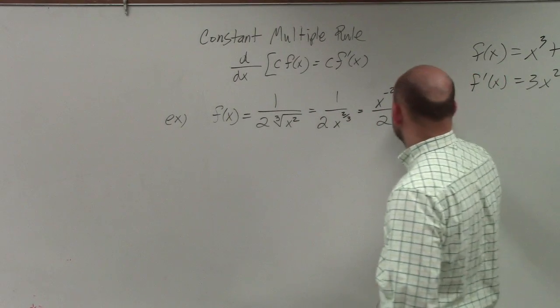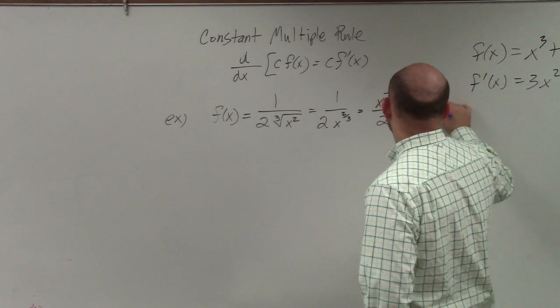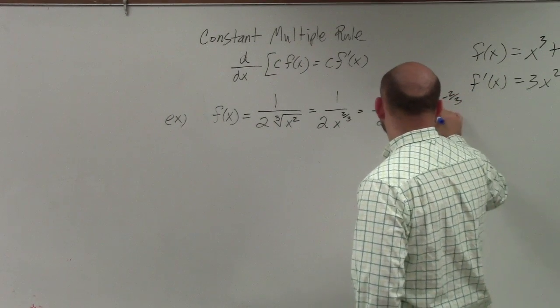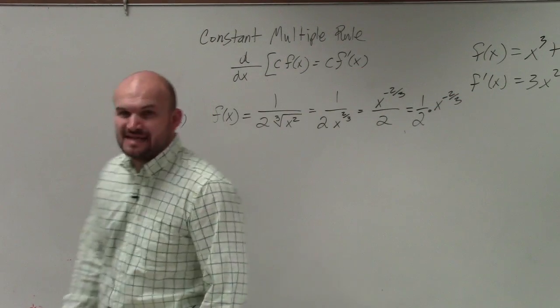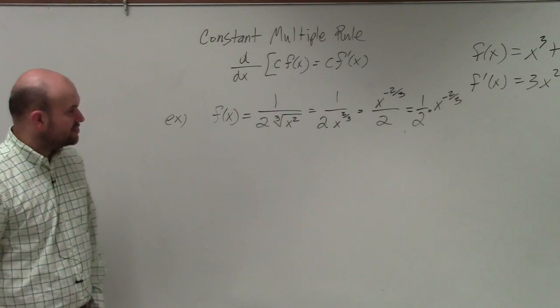You can see that I could take out my fraction here: x^(-2/3). So this is actually a constant being multiplied by a function.